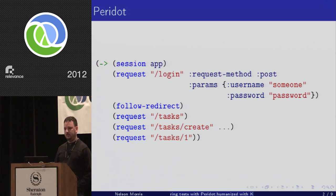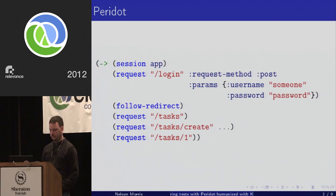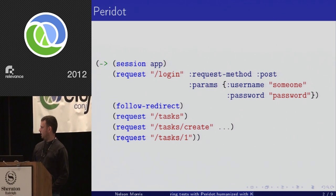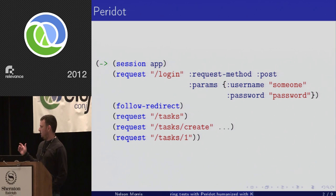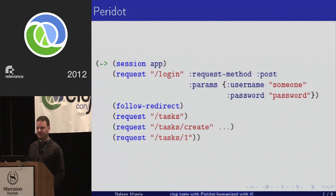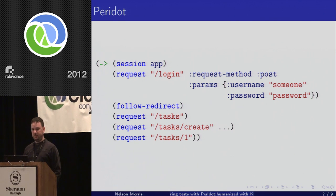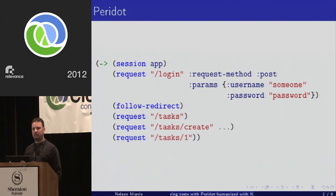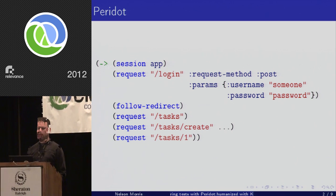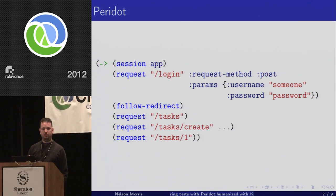You're also able to do things like follow redirections if you get a redirect. It parses it out, figures out the URL, and creates the next request for you. This example does a request, follows a redirect, logs in as a user, follows another redirect, and views a task. This goes beyond what ring-mock itself will do, because it actually parses out the cookies and keeps them in a cookie jar so that as you move through the session, you stay logged in as that particular user.